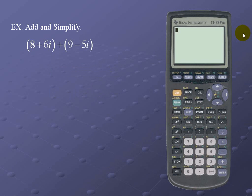Complex Numbers. Let's add and simplify the following complex numbers: (a + 6i) plus the complex number (9 - 5i).